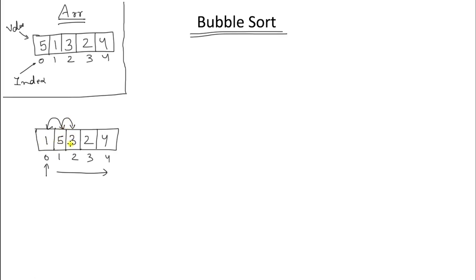Then we compare 5 with 3 — 5 is bigger, so we swap again; 5 goes here and 3 comes here. Now we compare 5 with 2 and swap again — 2 comes here and 5 goes here. Then again swapping because 4 is smaller than 5, so 5 comes to the end. Now 5 is at its correct position.